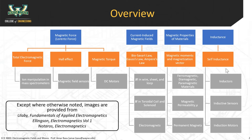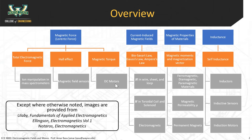If we have time, we'll talk about inductance. Inductances are important because the inductor is one of the four circuit elements - the resistor, capacitor, inductor, and the memristor, which was discovered just 20 years ago. We'll also cover inductive sensors, induction motors, and permanent magnet motors. DC motors are often not used in electric vehicles; induction motors are used in some Tesla vehicles, while permanent magnet motors are used in the Model 3 and the Chevy Bolt.